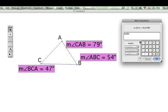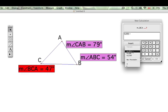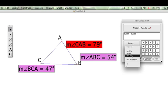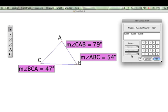So we click on that. So it's going to give us the measure of angle BCA, which is 47 degrees. We're going to add measure of angle ABC. And we're going to add the measure of angle CAB.